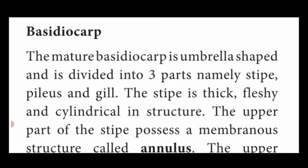The basidiocarp is divided into three important parts. One is the stalk-like, fleshy, cylindrical structure called stipe. The umbrella-shaped structure is named pileus. The umbrella-shaped pileus contains a number of chambers known as gills. The stipe is thick, fleshy, and cylindrical in structure.